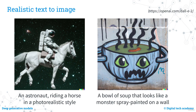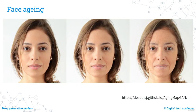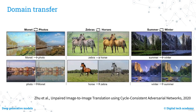What about seeing how your face would look in the future or the past? In this slide, you can see a face in the centre, with an aged version on its right and a rejuvenated version on its left. Another area where generative models help is domain transfer: a Monet painting can be translated into a corresponding photorealistic image, and vice versa — a photo can be rendered as if painted by Monet. Starting from an image of zebras, you can obtain the corresponding image with horses, and vice versa.